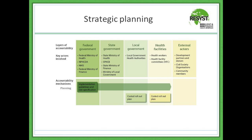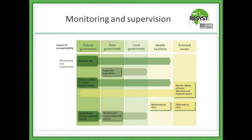Under monitoring and supervision, the federal government provides an oversight and governance framework. The state government — as another layer of accountability — will provide supportive supervision to the local government, while also looking into health facilities. The key function of the state government is supportive supervision to local government, which in turn provides supportive supervision to health facilities.